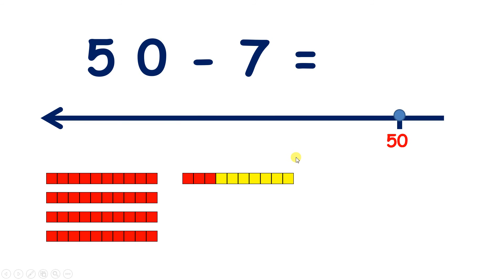So on a number line, we can jump back from 50 to 43. 50 subtract 7 gives us 43.